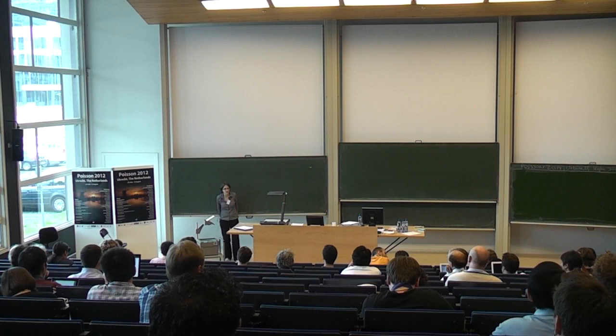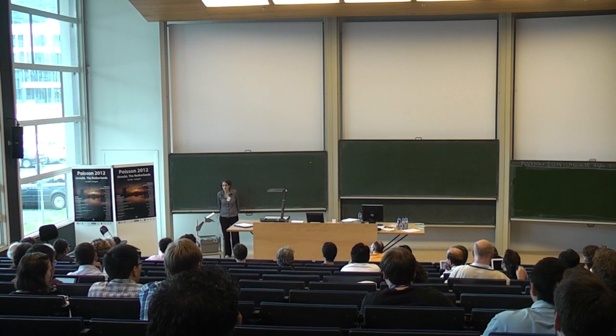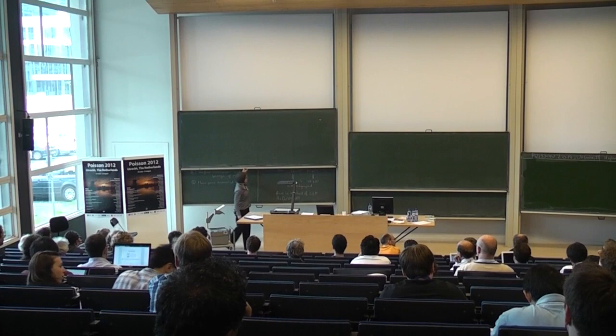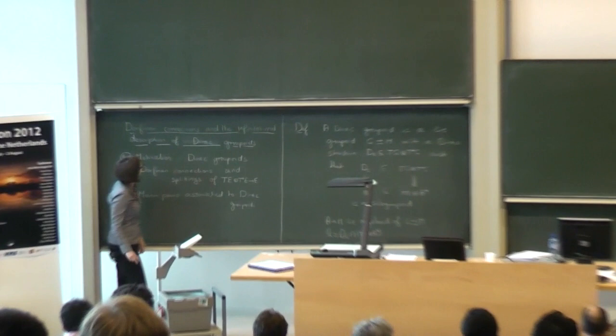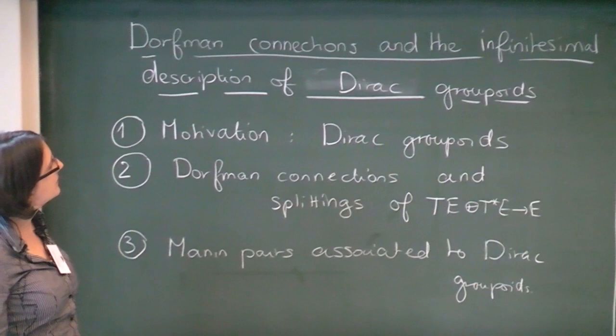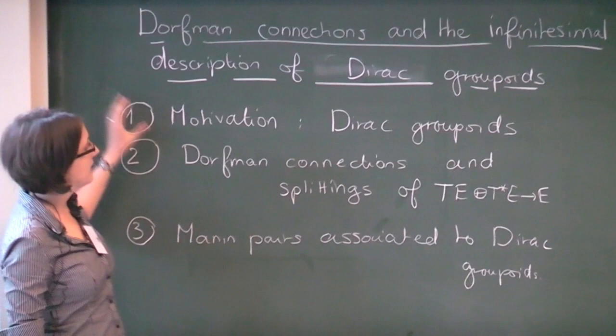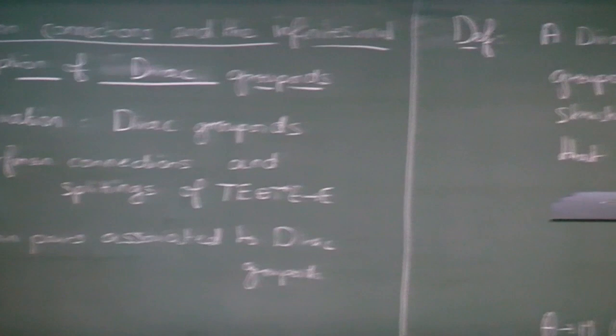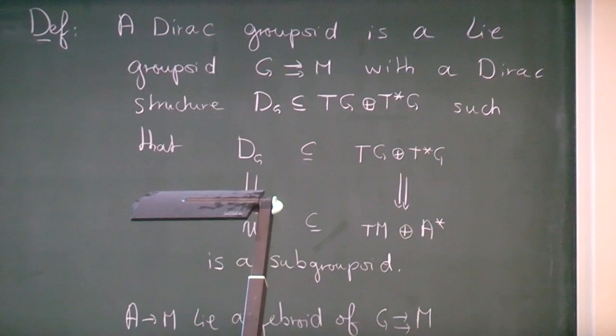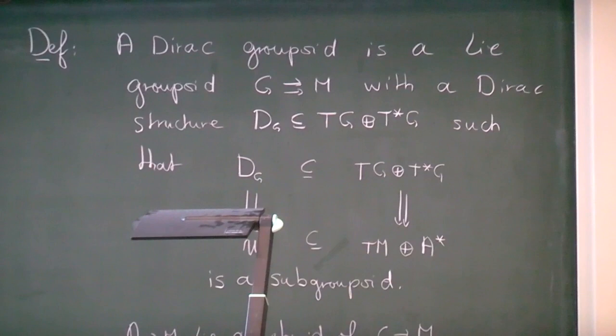I'd like to thank the organizers for giving me the great opportunity to talk here, and also Mario's group and all these nice organizations. I've changed the title of my talk — my collections are called Dorfman collections after all. I'll speak about the problem of finding the infinitesimal description of Dirac group points, which I'm going to explain. I start by defining the Dirac group points and explaining what I mean by finding this infinitesimal data. Then I'll talk about something I define doing this, which I call Dorfman connections.